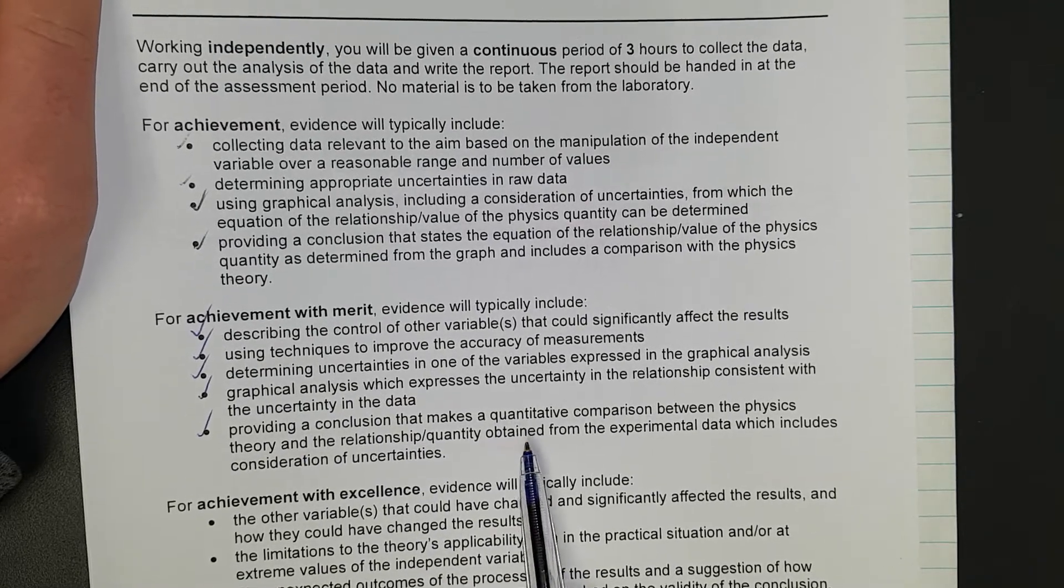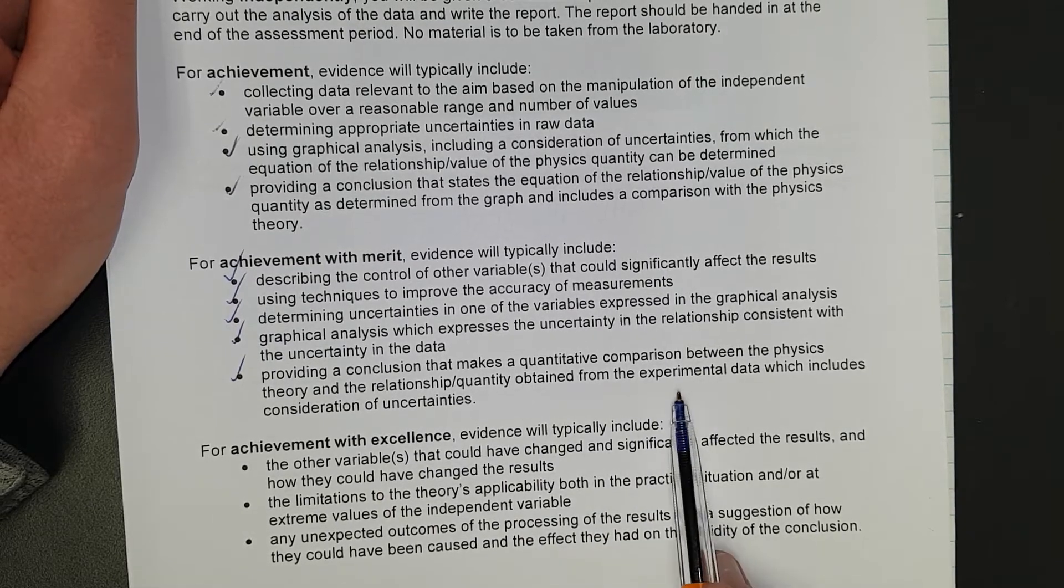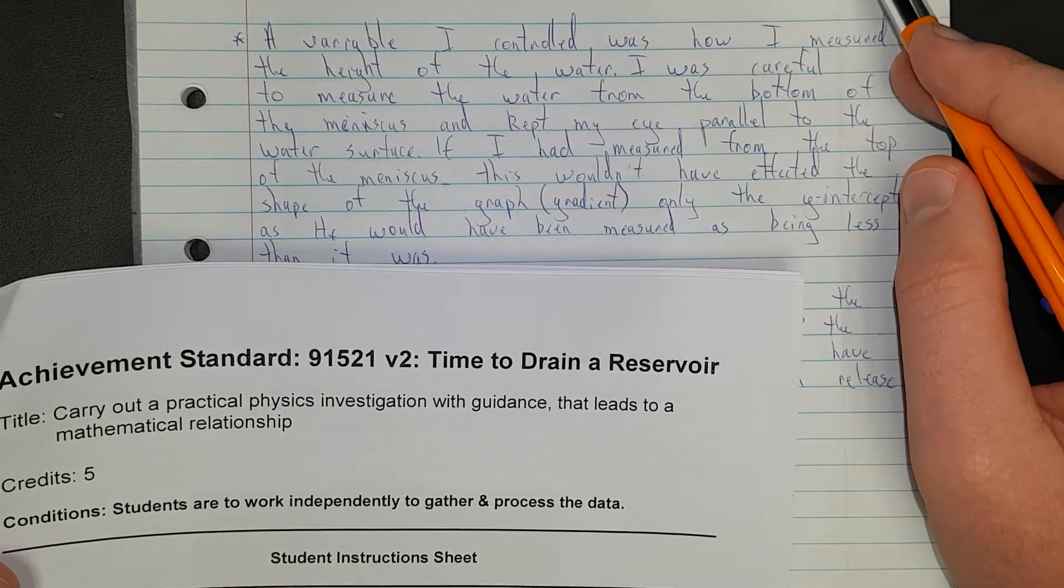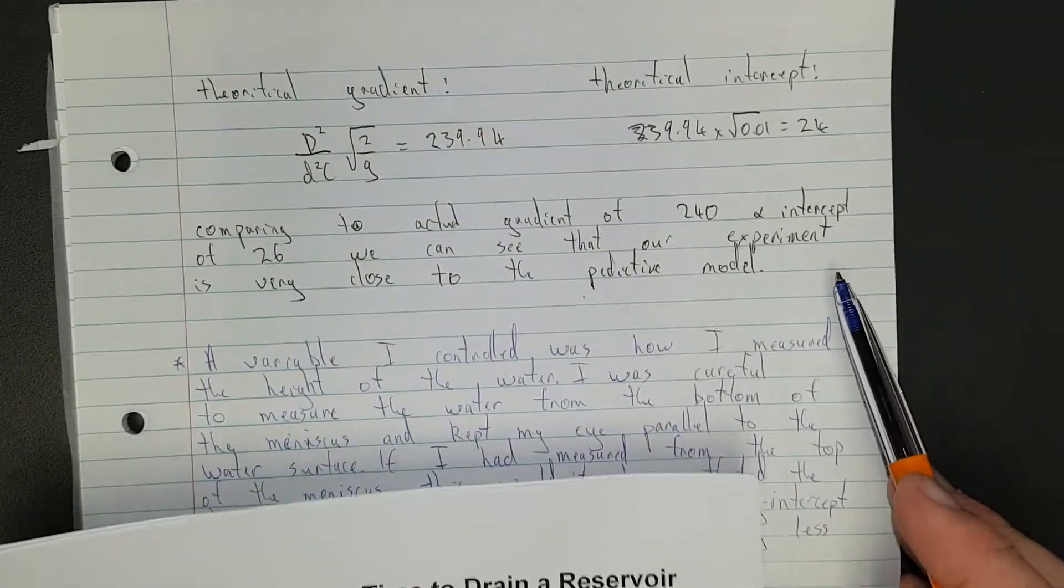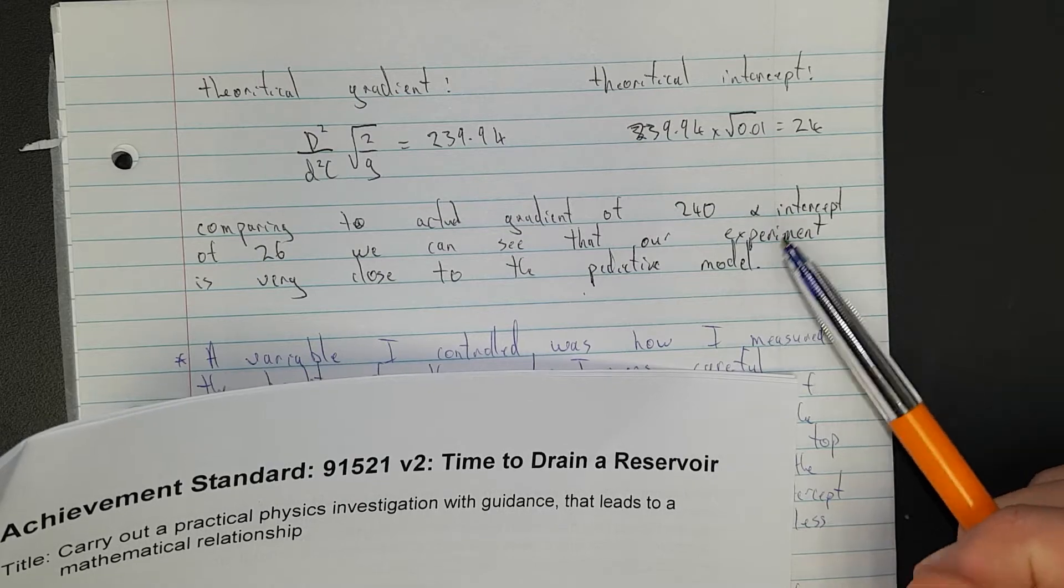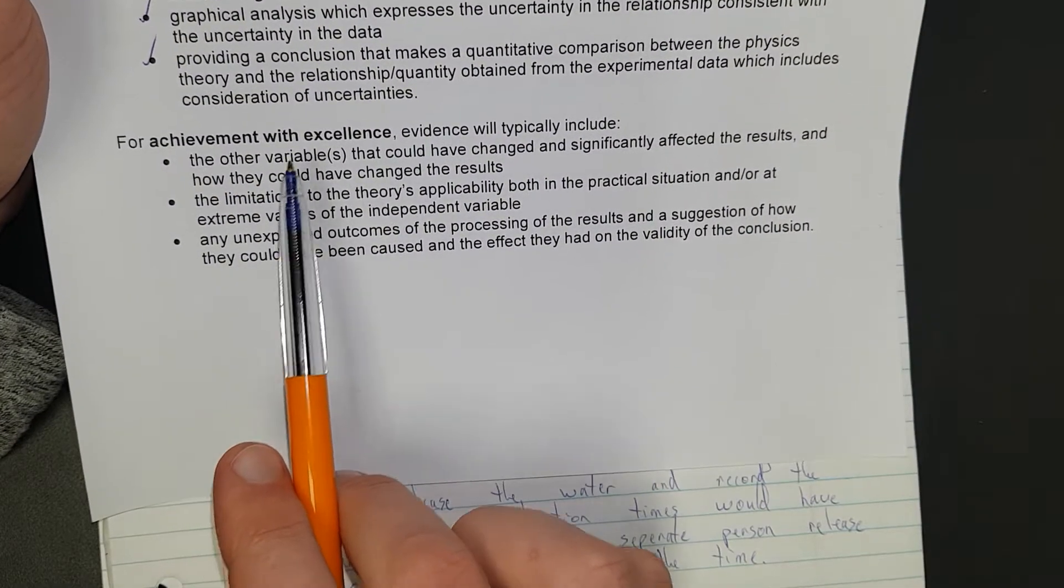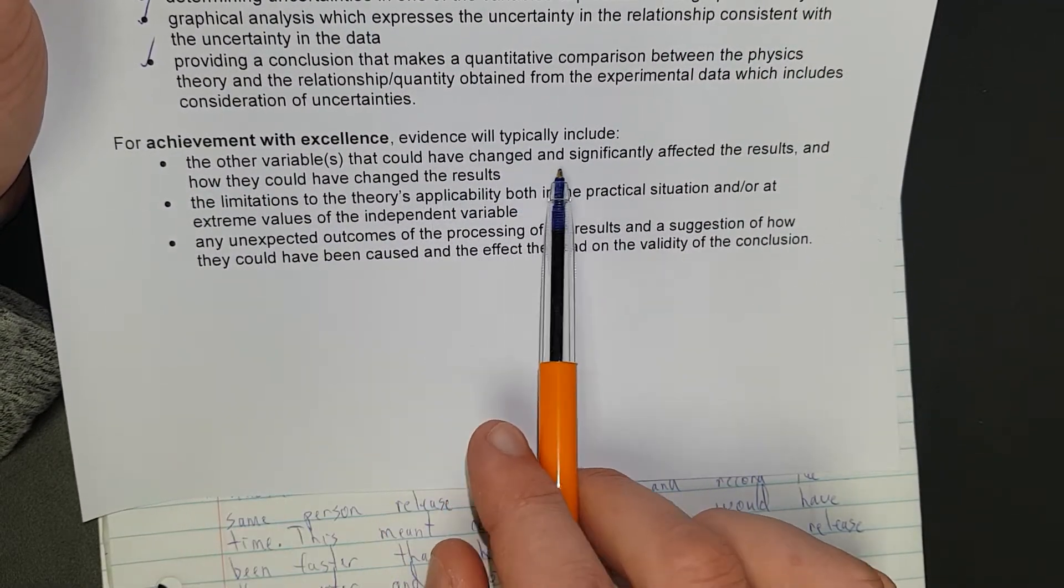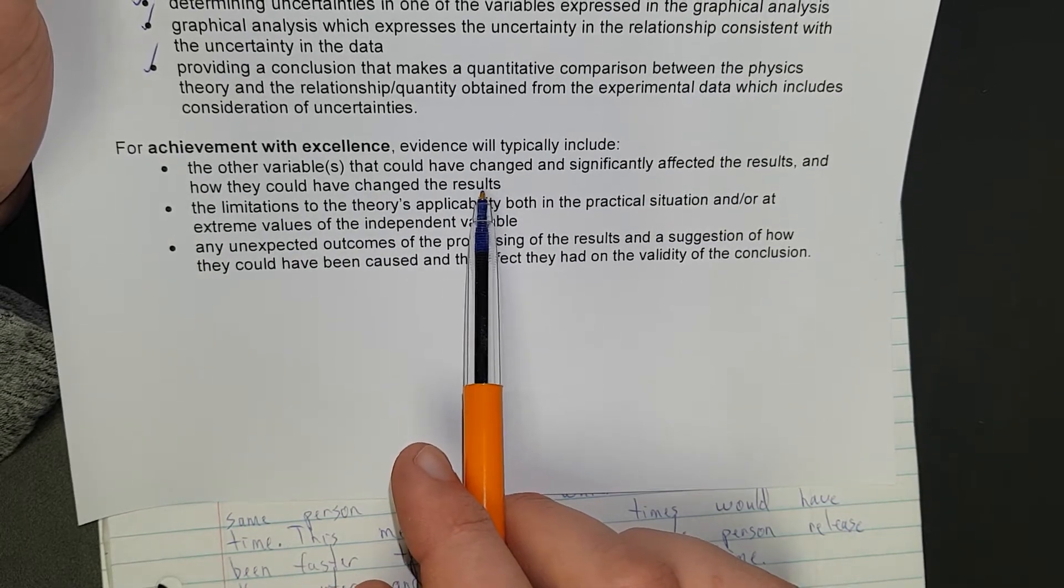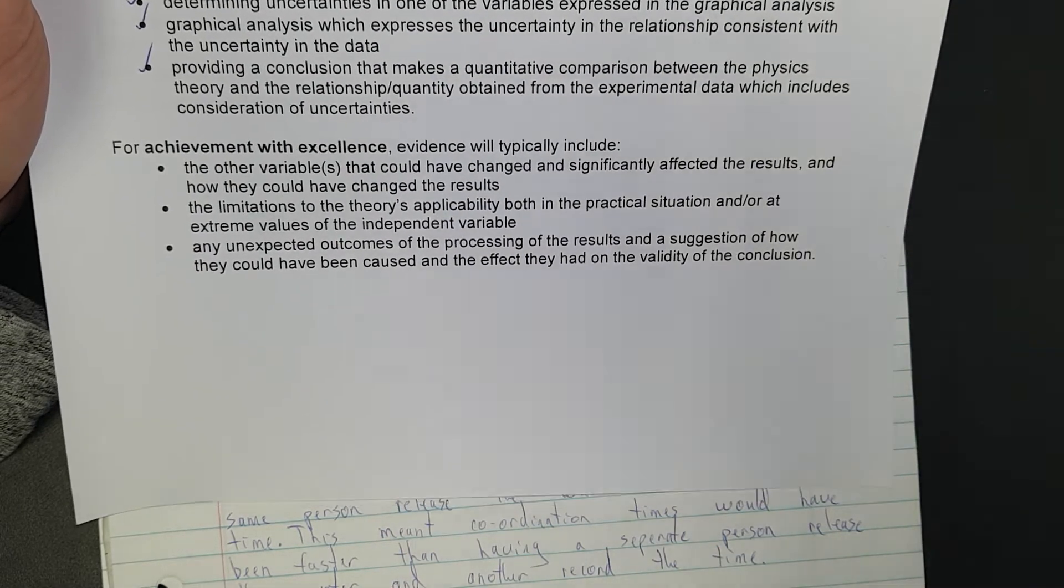Provide a conclusion that makes a quantitative comparison between the physics theory and the relationship quantity obtained from the experimental data which includes consideration of uncertainties. So we sort of did that. We sort of did that up here. But I'm going to do it a little more detailed later on. So we'll get to that. Right, so the next one is excellence. Other variables that could have changed and significantly affected the results and how they could have changed the results. So I'm going to pause the video and write up a big paragraph on the whole design and how that could have changed the results.